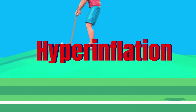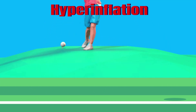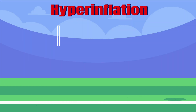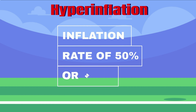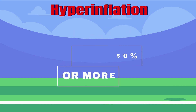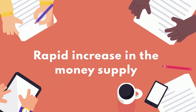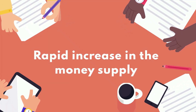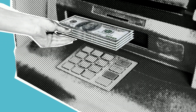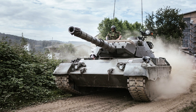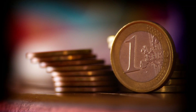Hyperinflation is a very high and accelerating rate of inflation. It is typically defined as an inflation rate of 50% or more per month, or prices that are doubling every few weeks. Hyperinflation can occur when there is a rapid increase in the money supply, often as a result of government printing money to finance large budget deficits, but also due to other economic factors such as war, economic imbalances, or political instability.